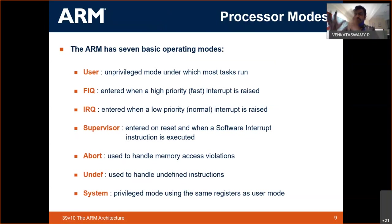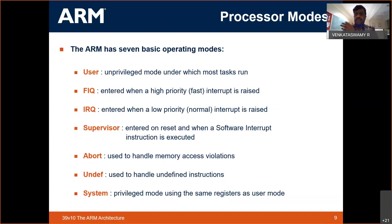In ARM, the state is preserved when you run a different function. The state includes things like the status word register, stack pointer, program counter, and memory values — all of these define how and what the program is running. Whenever you have two tasks, ARM preserves the state of each independent operation. This is completely implemented in the ARM processor.